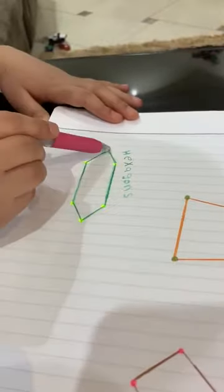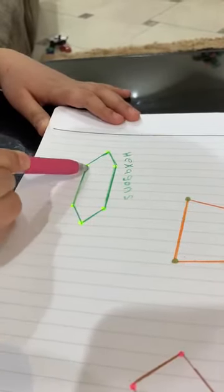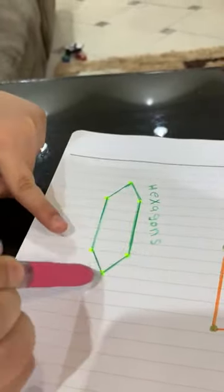I have another shape, this is the last shape. Let's count the sides: 1, 2, 3, 4, 5, 6, and 1, 2, 3, 4, 5, 6. The name is hexagon.